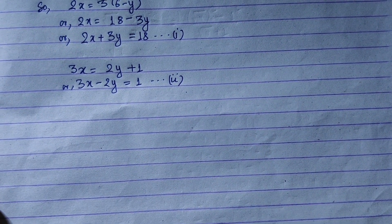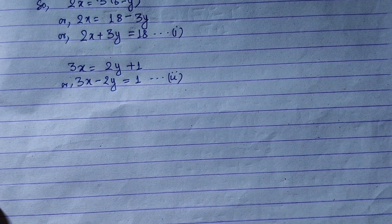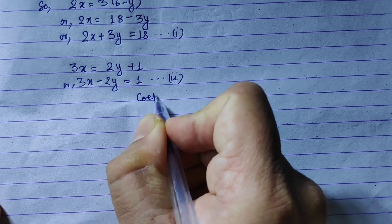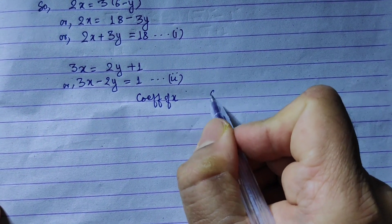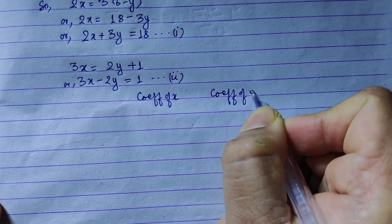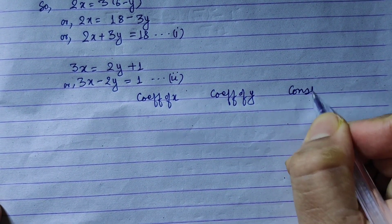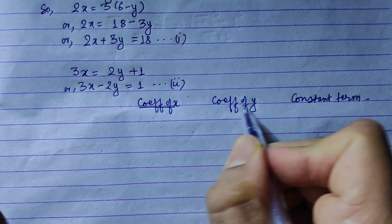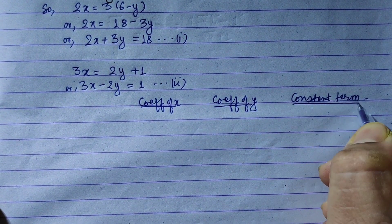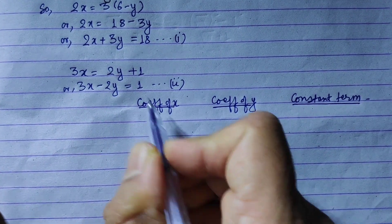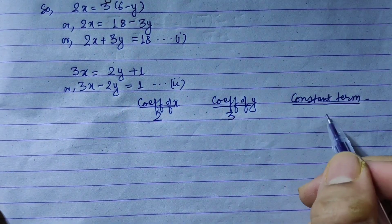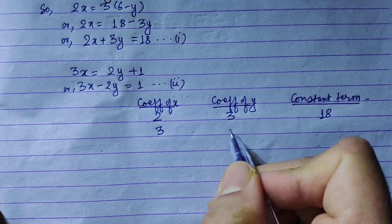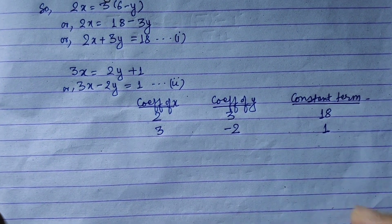Now in Cramer's Rule, let's take a look at the setup. I will write the coefficient of x, coefficient of y, and the constant term for each equation. In this case, we will write 2, then 3 and 18. We will write the second equation: 3 equals 1.